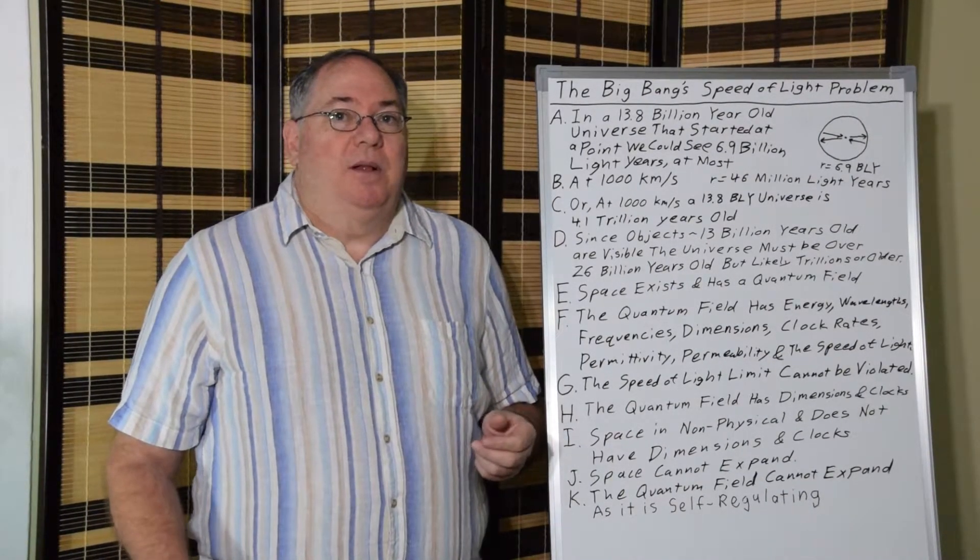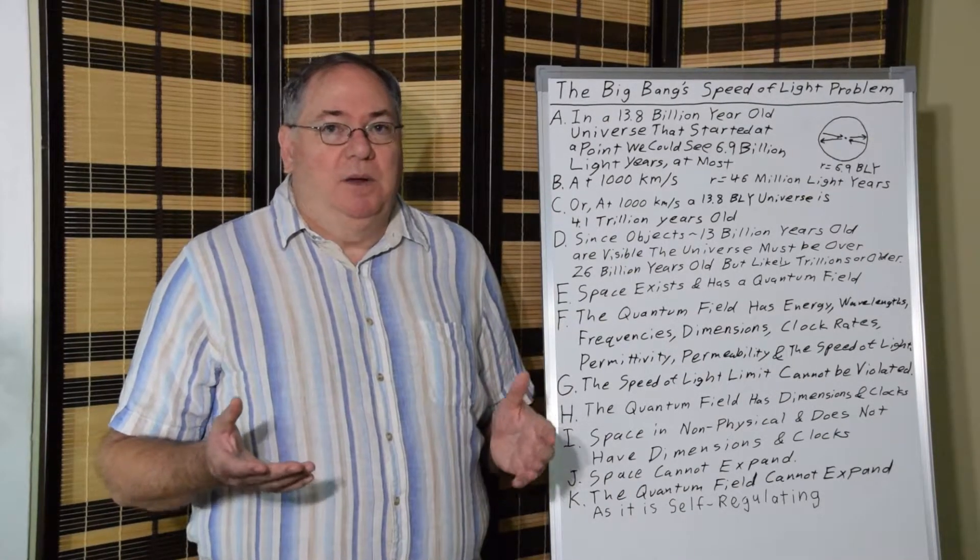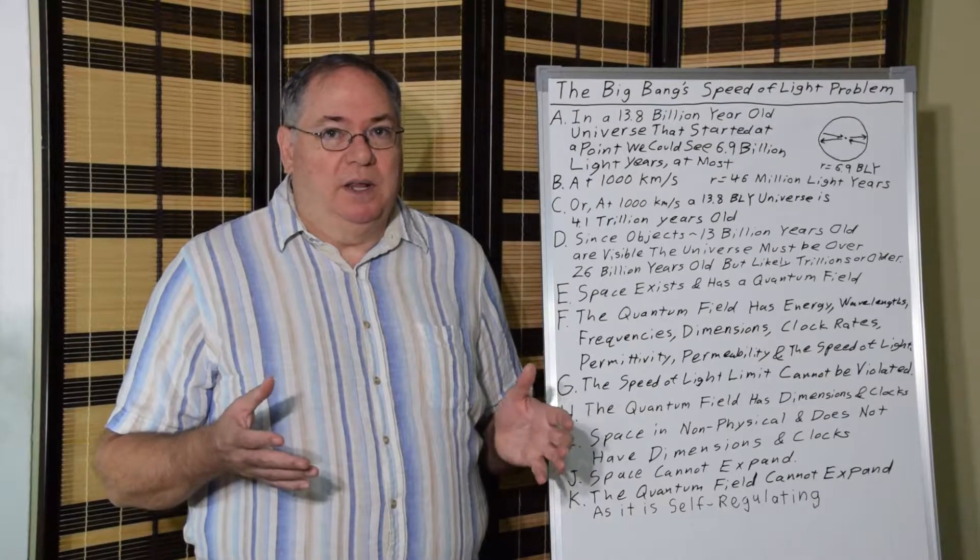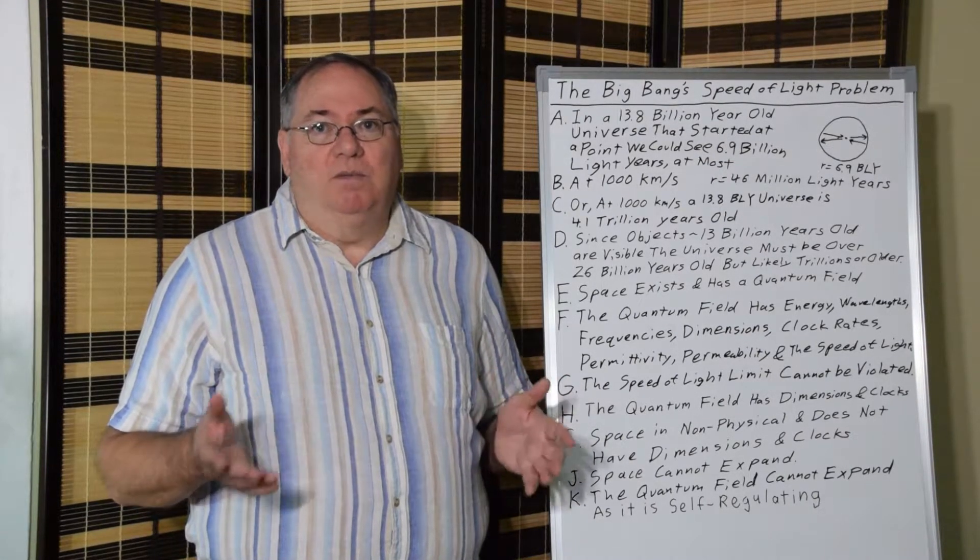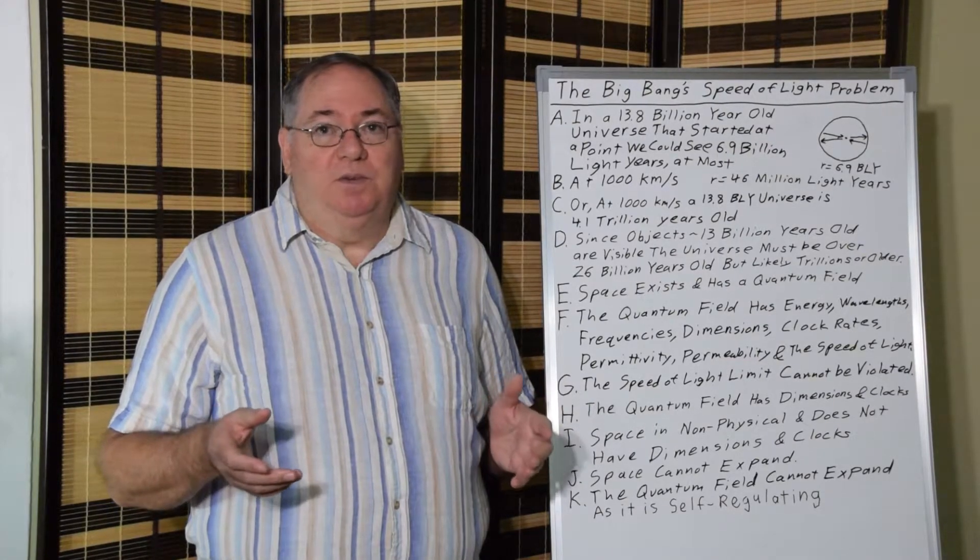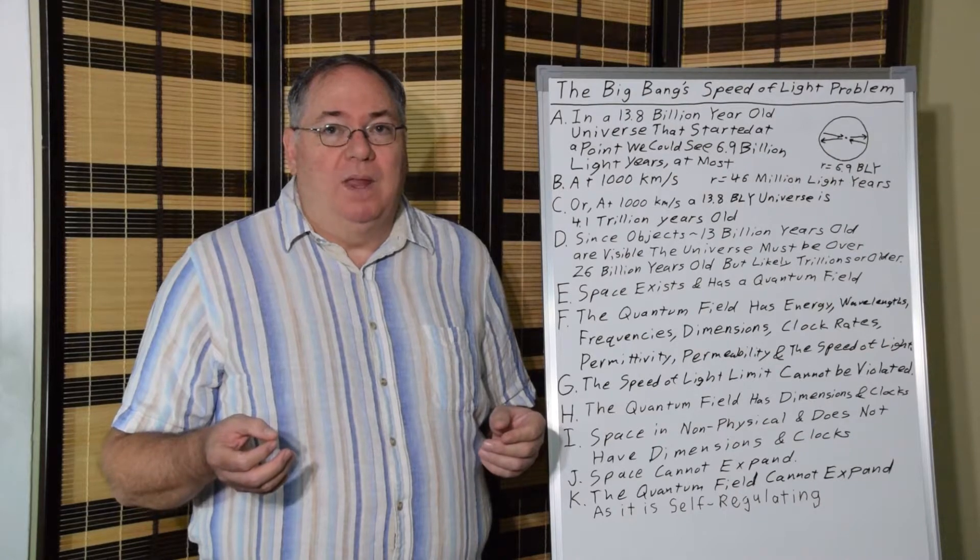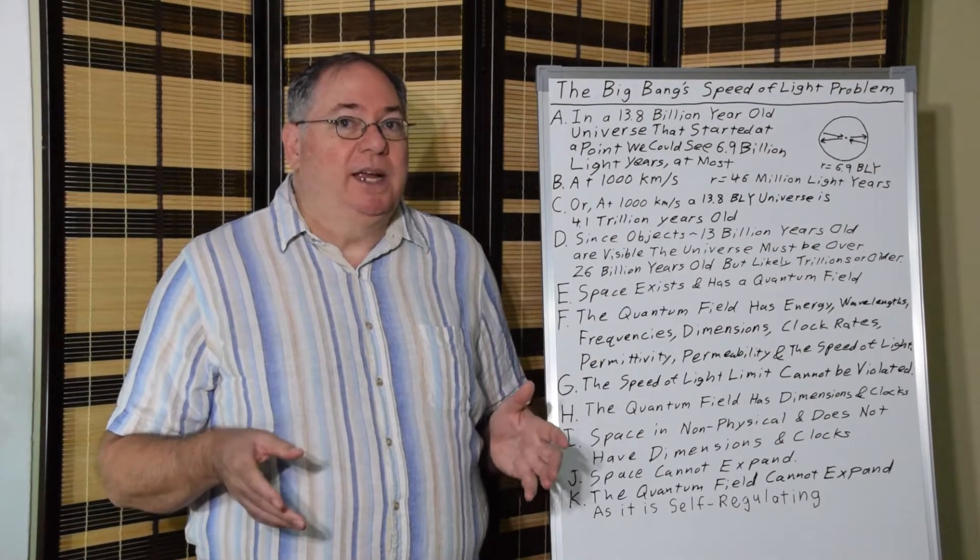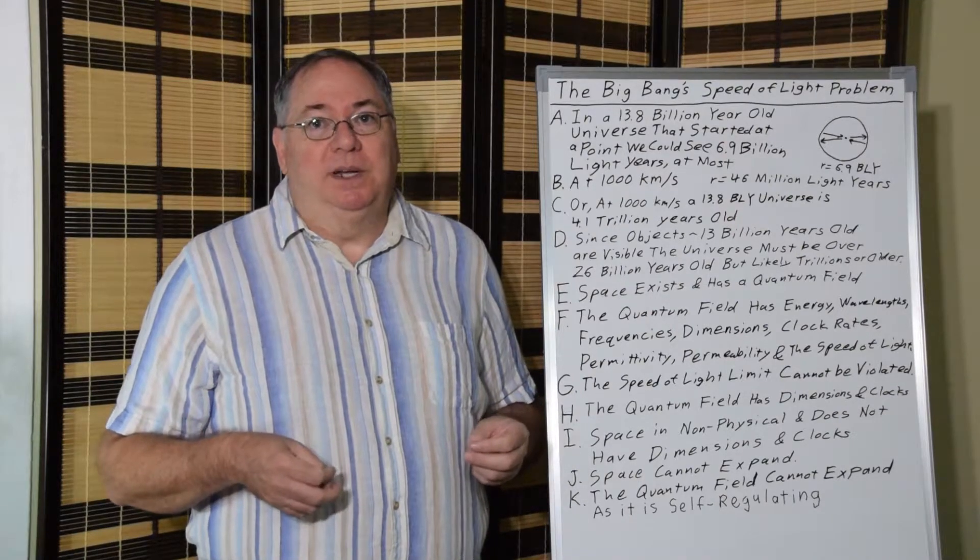And we can look at that problem in terms of voids. There are regions of space within the visible universe where there are very few stars that are called voids. The largest of those voids is nearly a billion light years across. And at 1,000 kilometers per second, a void that size would take hundreds of billions of years to form.